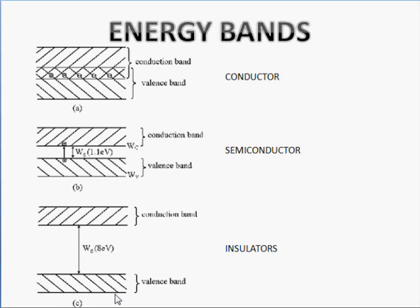Above the valence band there is a band known as the conduction band. If an electron attains that energy level — that is, enters the conduction band — it is able to move freely within the structure and is able to conduct electricity. We have diagrams for all three: conductor, semiconductor, and insulators. Let me discuss insulators first.